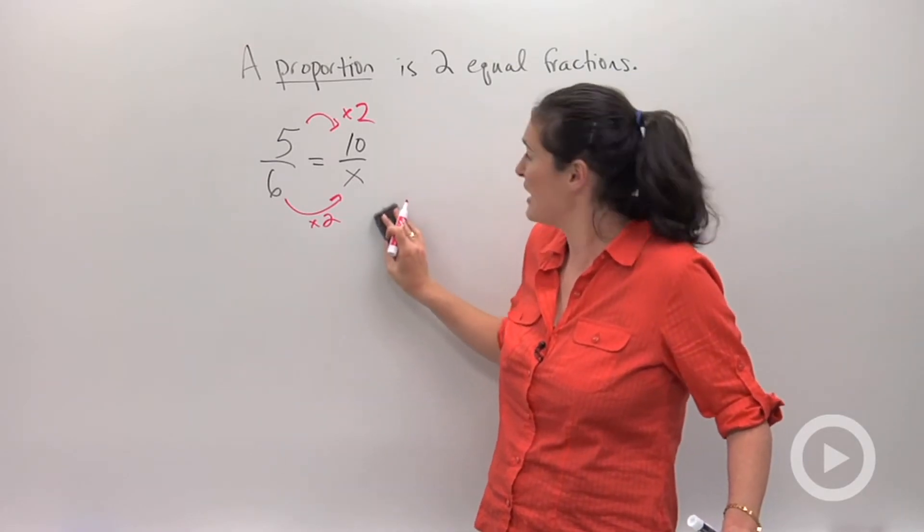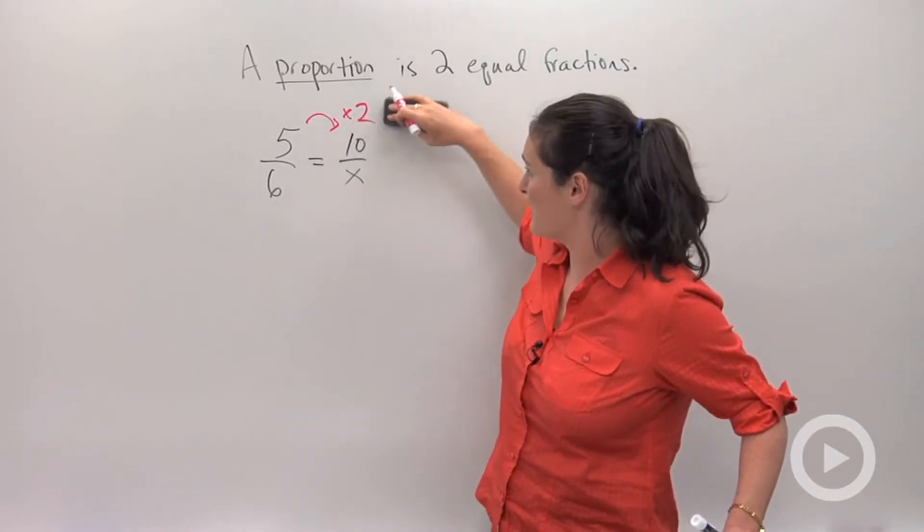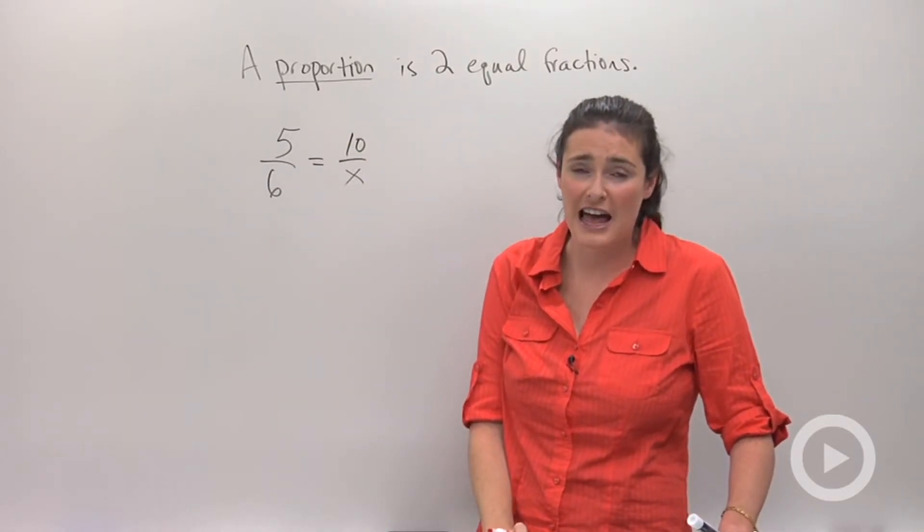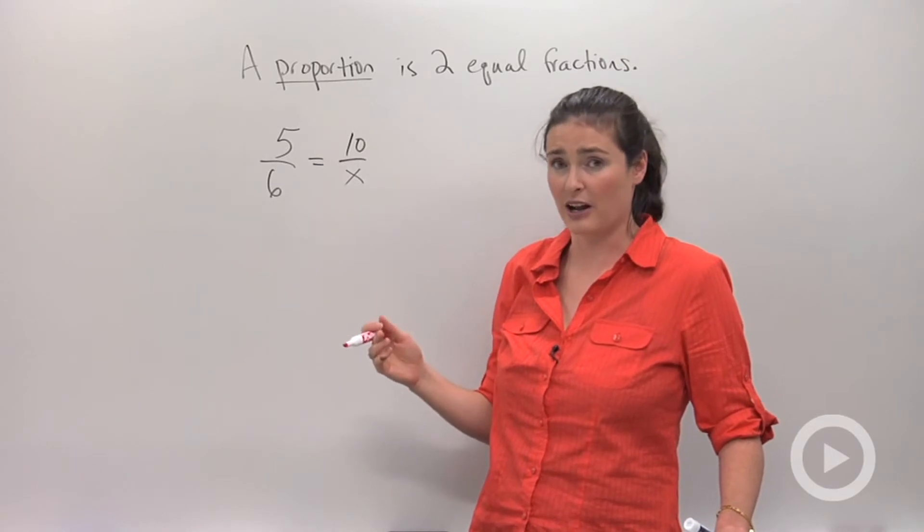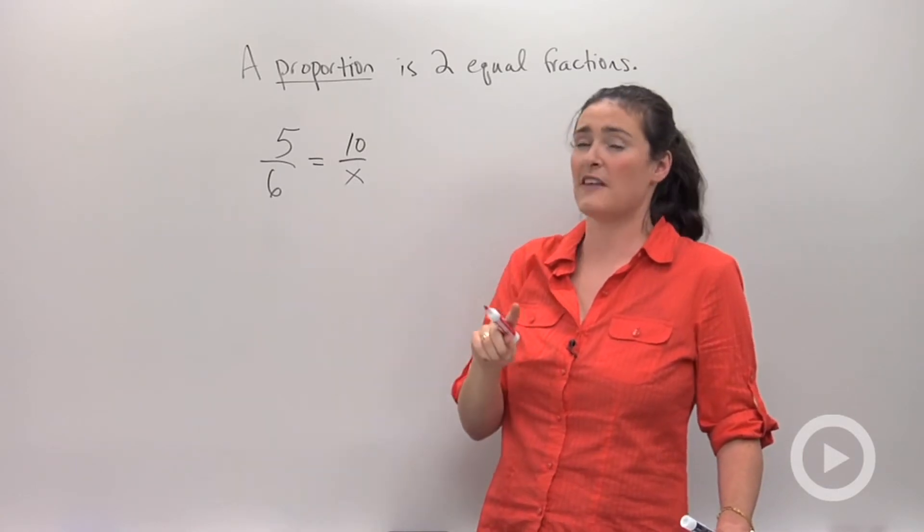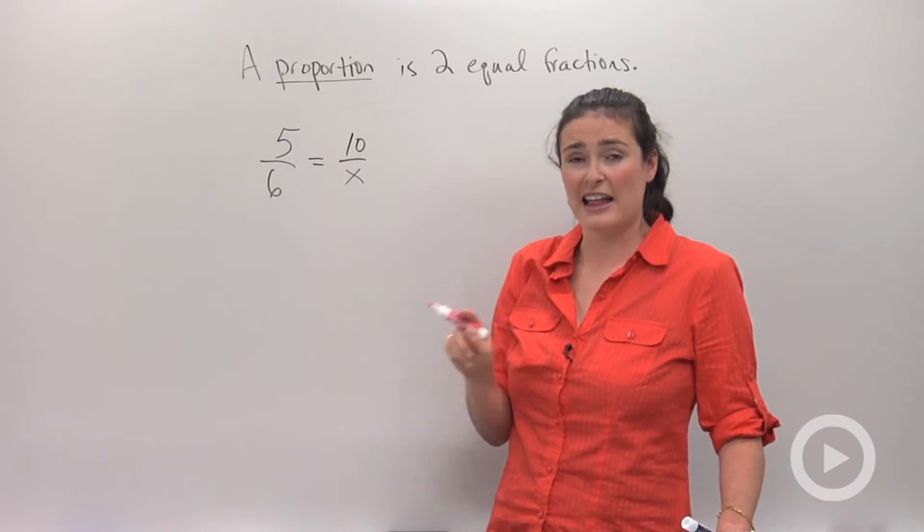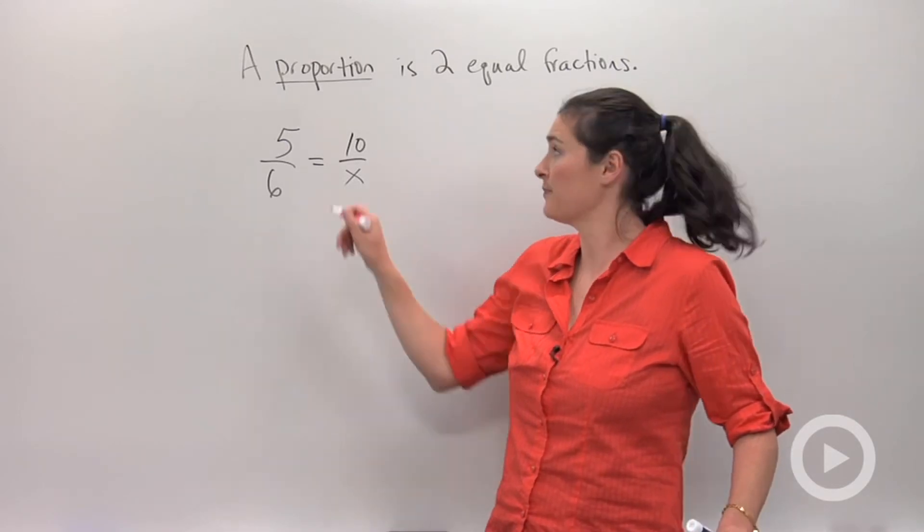Another way to look at it is to do what's called cross-multiplying. Cross-multiplying is where you multiply the diagonal quantities and set the products equal to each other. Let me say that one more time. You multiply the diagonal quantities and set the products equal to each other. So here we go.